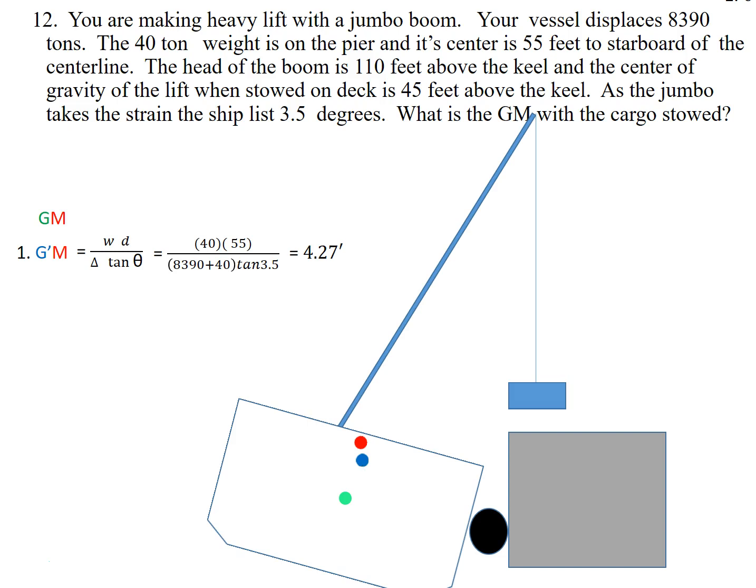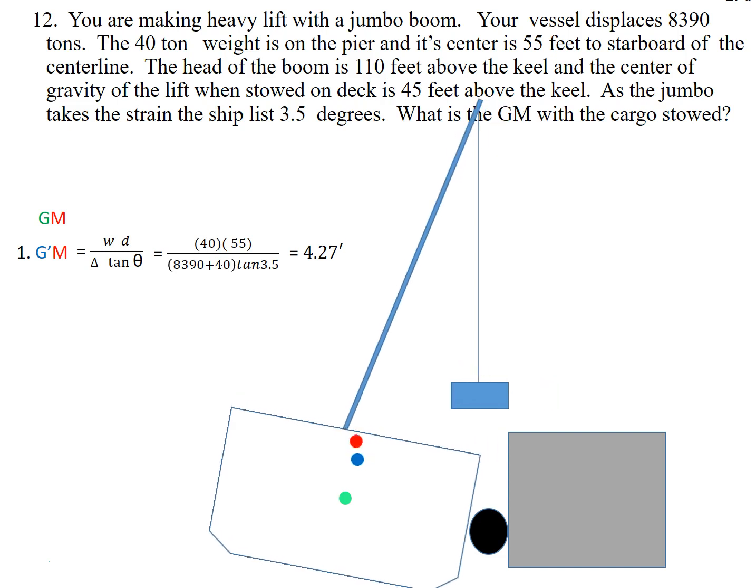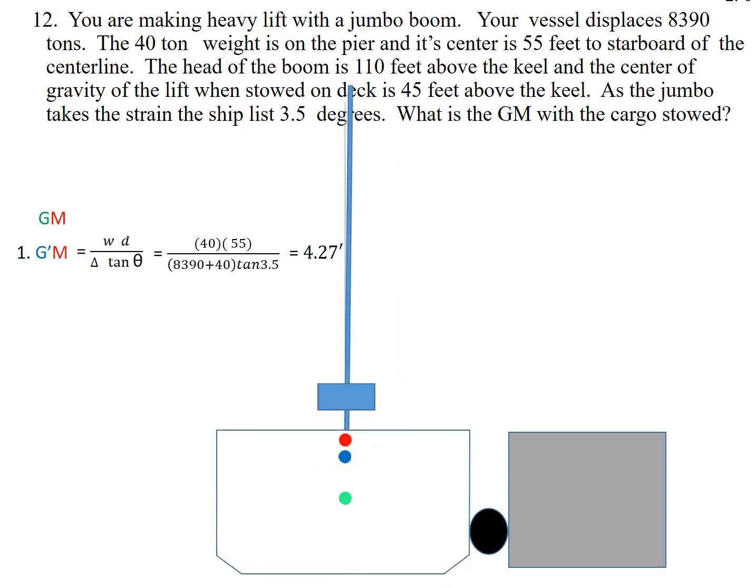So now what we're going to do is we're going to put that weight on the vessel. So we're going to bring our boom in. Now at this point, by shifting it from here to there, I didn't change the vertical component of KG. However, since the weight is now over the center line, I brought that weight over the center line and I lost my inclination. So I no longer have an angle of list.